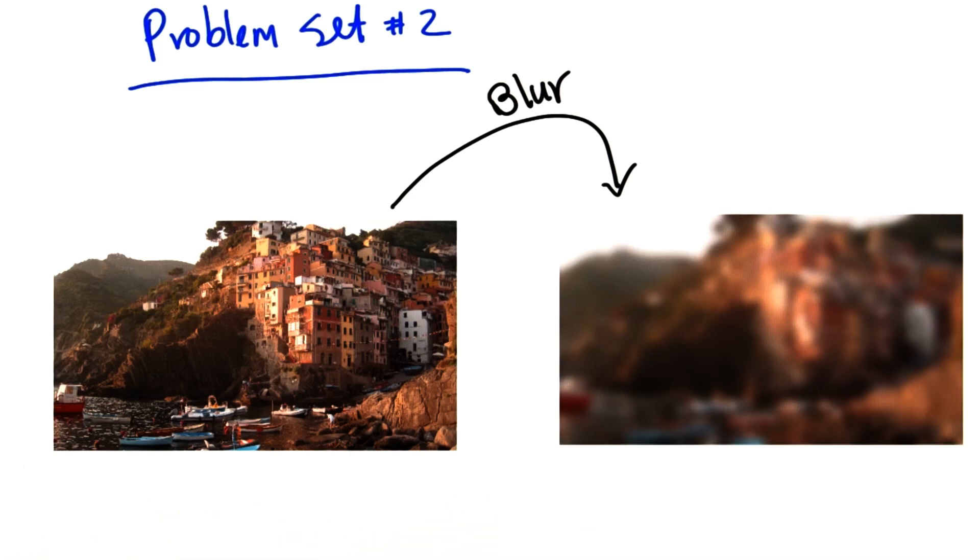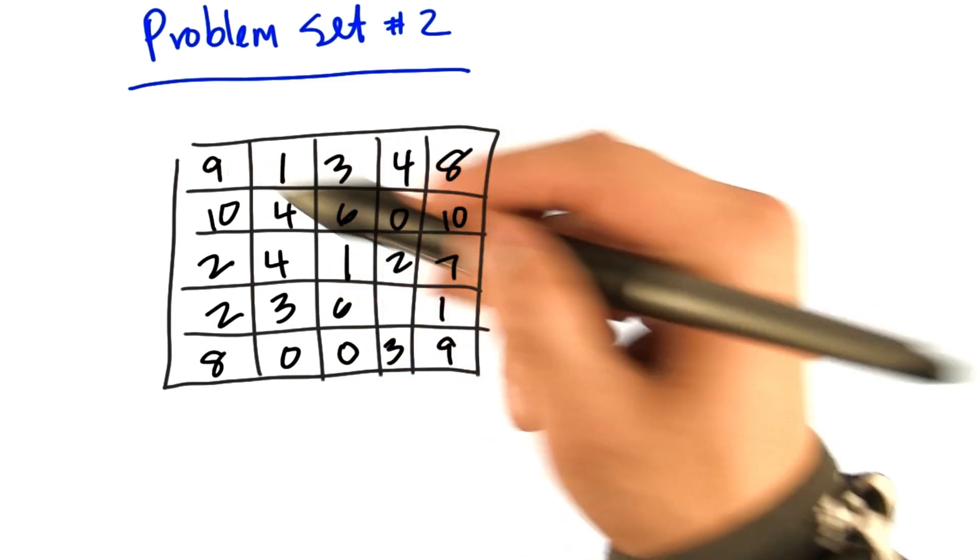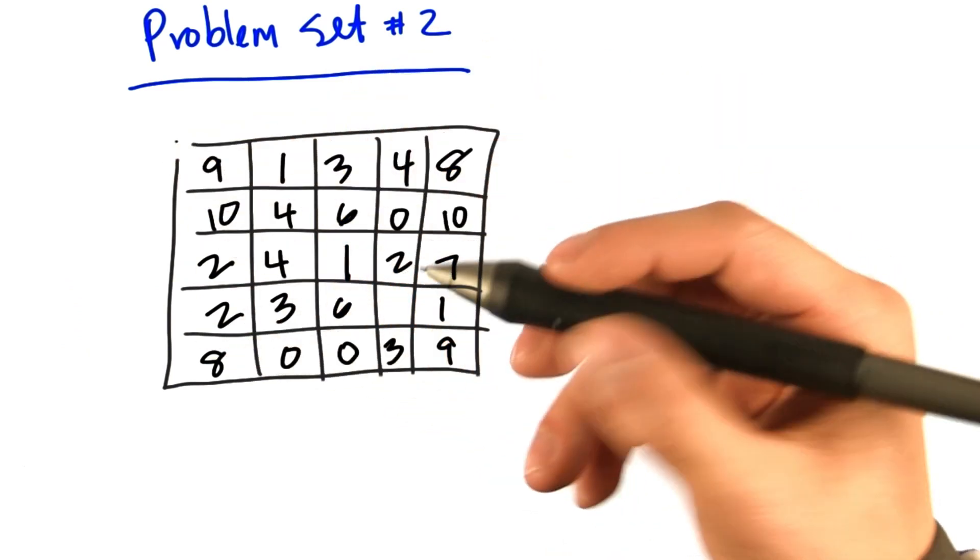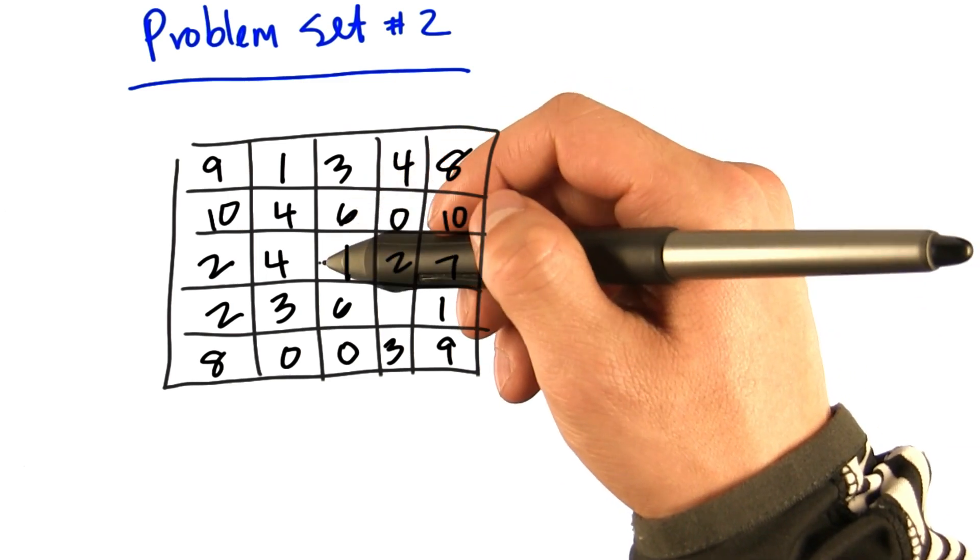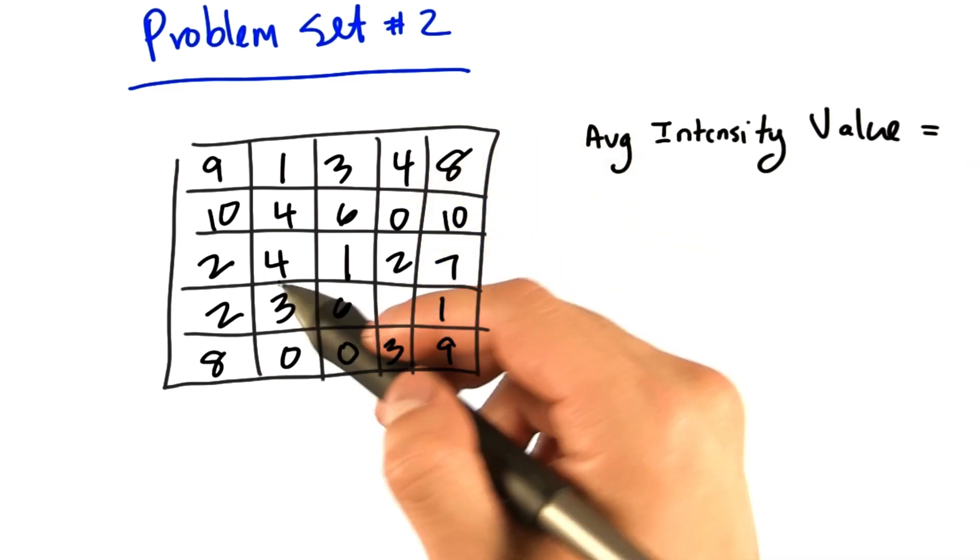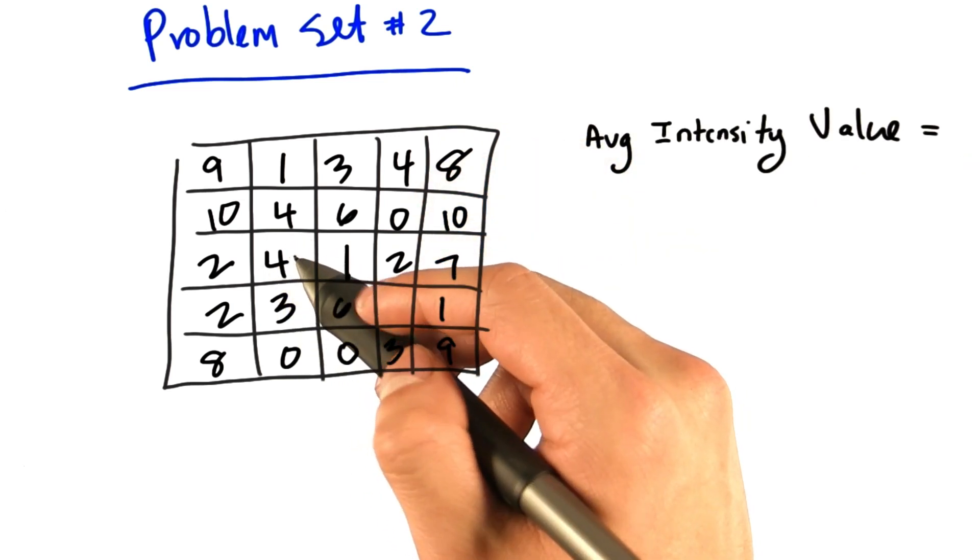So let's take a closer look at a simple example demonstrating the kind of local averaging that we are talking about here. So suppose we have the following pixel representation of an image, and we want to calculate the average intensity value for this pixel right here. So what do we do? First, we will take the value of this pixel,